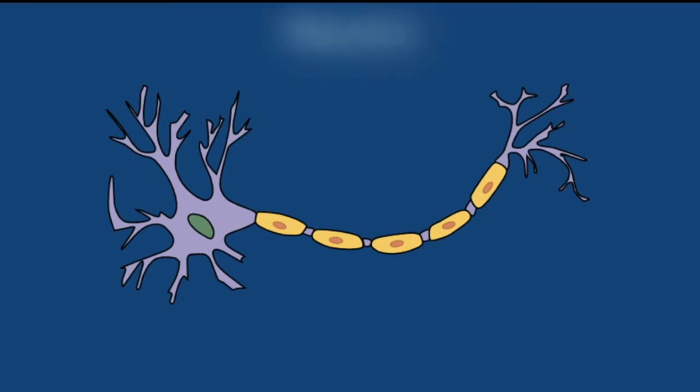So this is a neuron. A neuron is a part — you could think of it as the building block of the nerve. The nerves are basically the pathways that connect the brain to the other parts of the body, and this allows the brain to communicate with the other parts of the body.